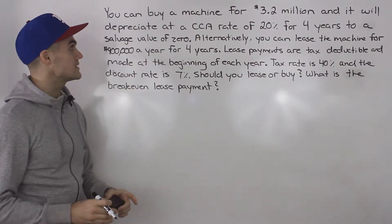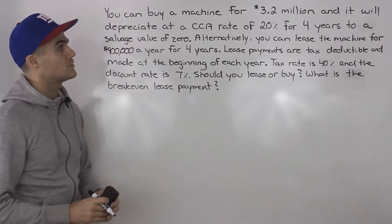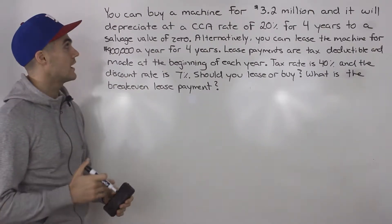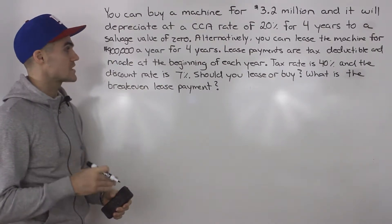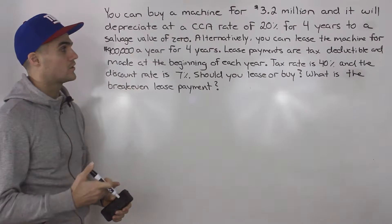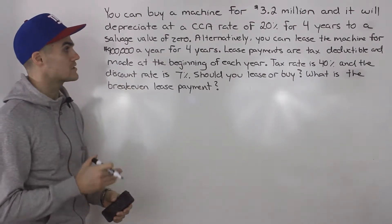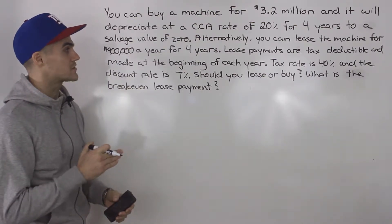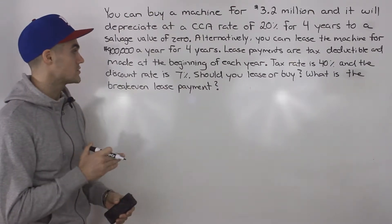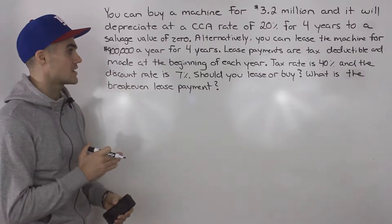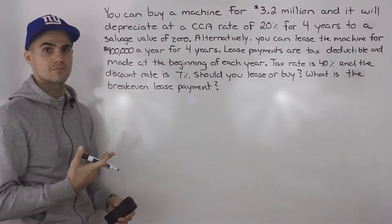Let's read the scenario. You can buy a machine for $3.2 million, and it will depreciate at a CCA rate of 20% for four years to a salvage value of zero. Alternatively, you can lease the machine for $900,000 a year for four years. Lease payments are tax deductible, made at the beginning of each year. Tax rate is 40%, discount rate is 7%. Should you lease or buy, and what is the break-even lease payment?